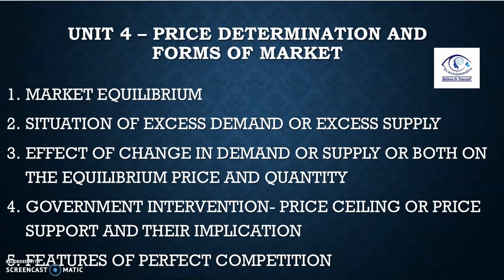Coming to the last unit — 6 marks — we are expecting market equilibrium where demand and supply are equal. Topics include: situations of excess demand or excess supply and how the market comes back to the equilibrium point. A sure-shot question is the effect of change in demand, supply, or both on equilibrium price — for example, a rightward shift in demand raises price; an increase in supply lowers price. There are 8 to 12 cases that can be asked. Also important: government intervention — price ceiling to safeguard consumers and price support or minimum price to safeguard producers — and their implications.